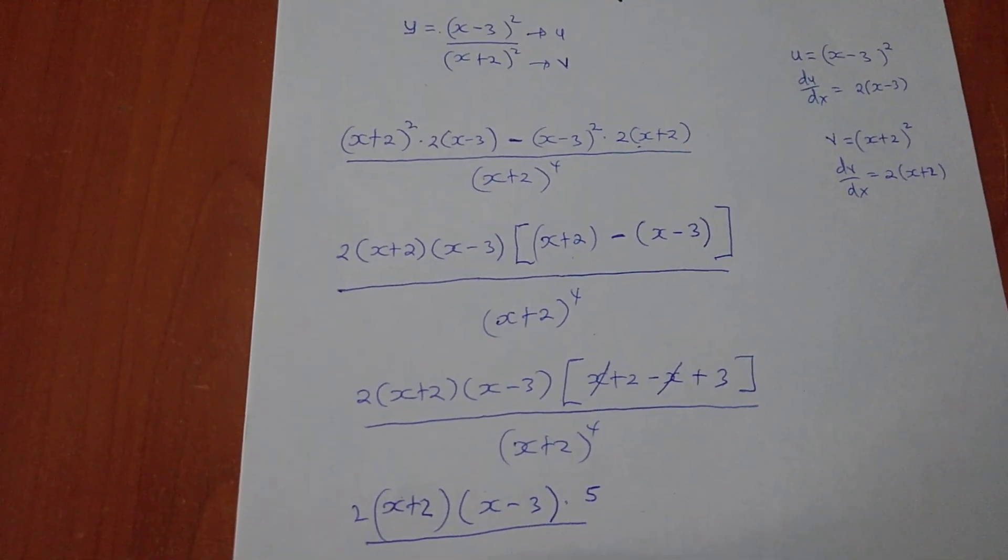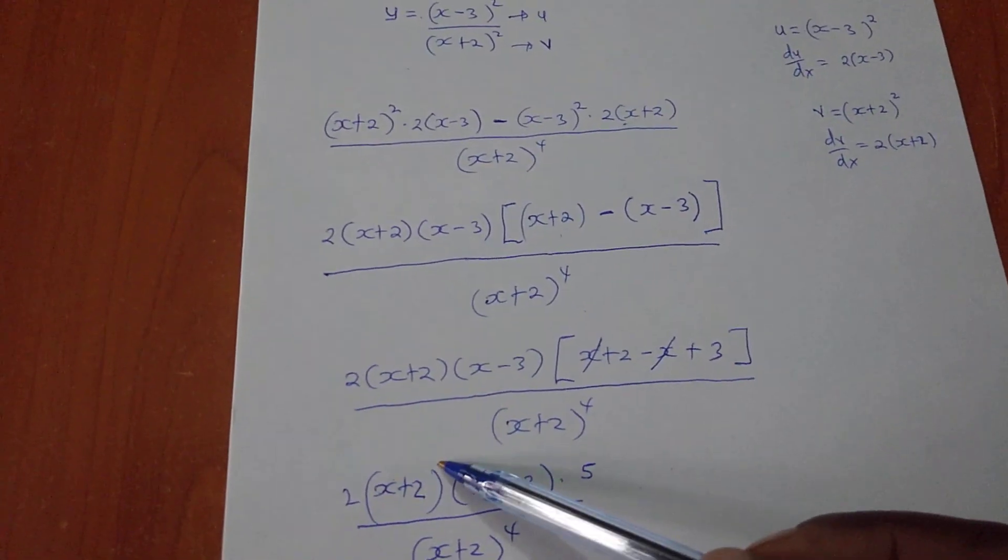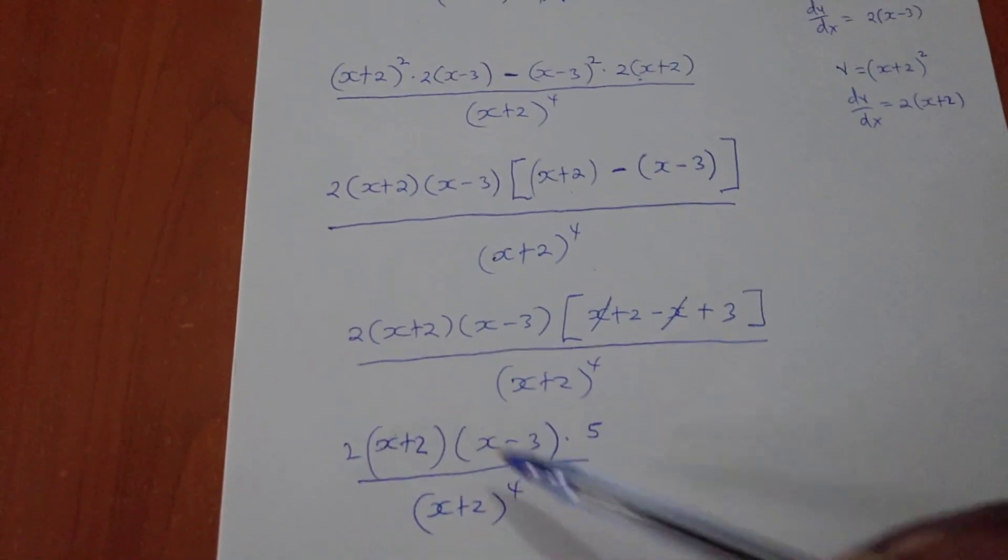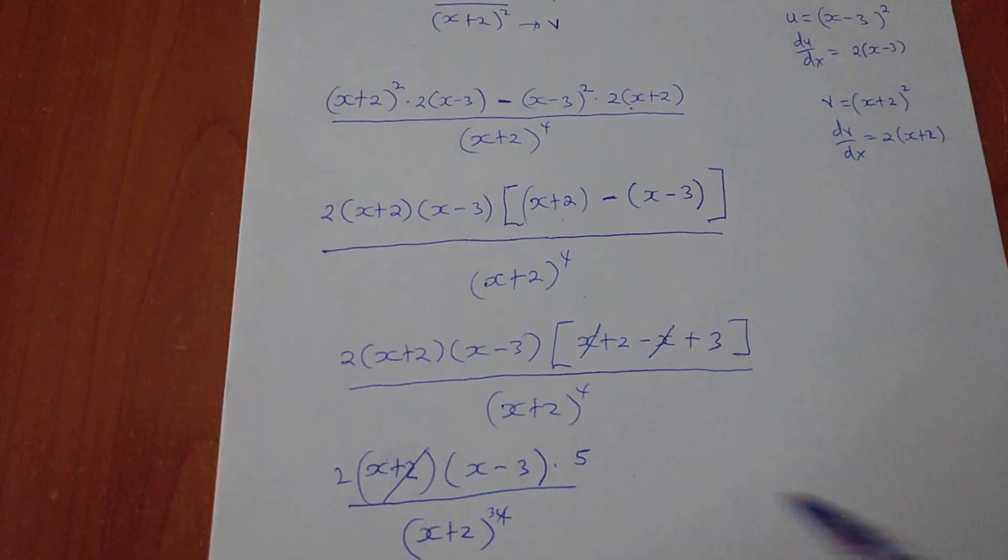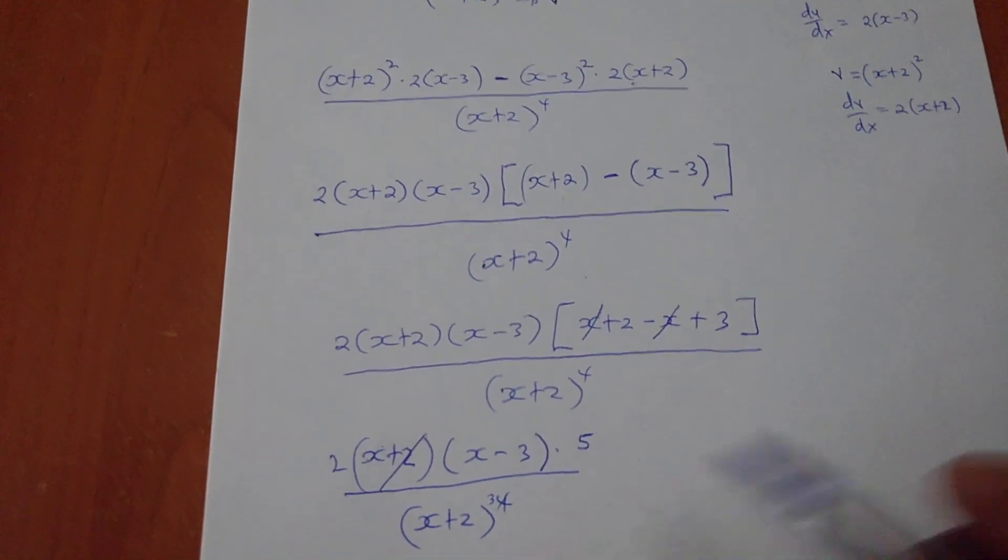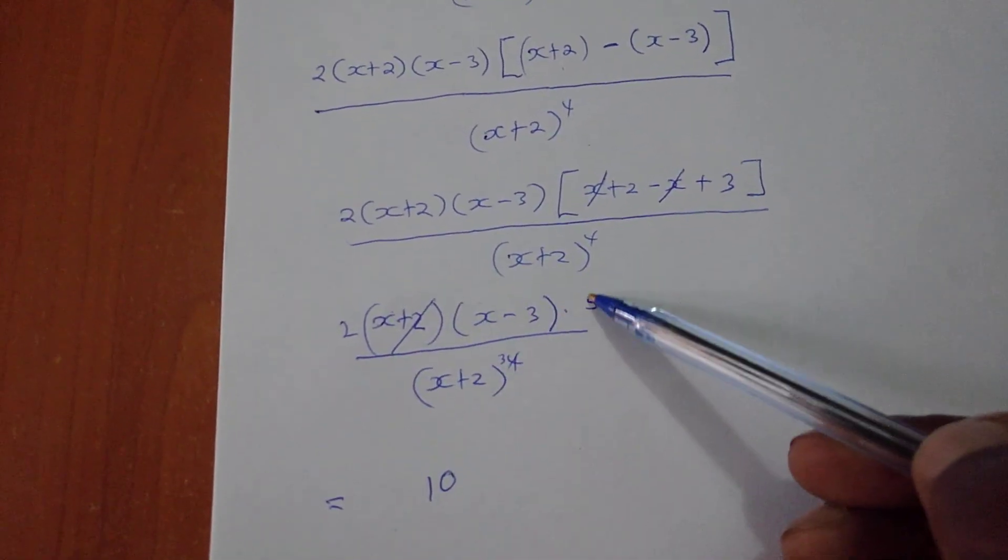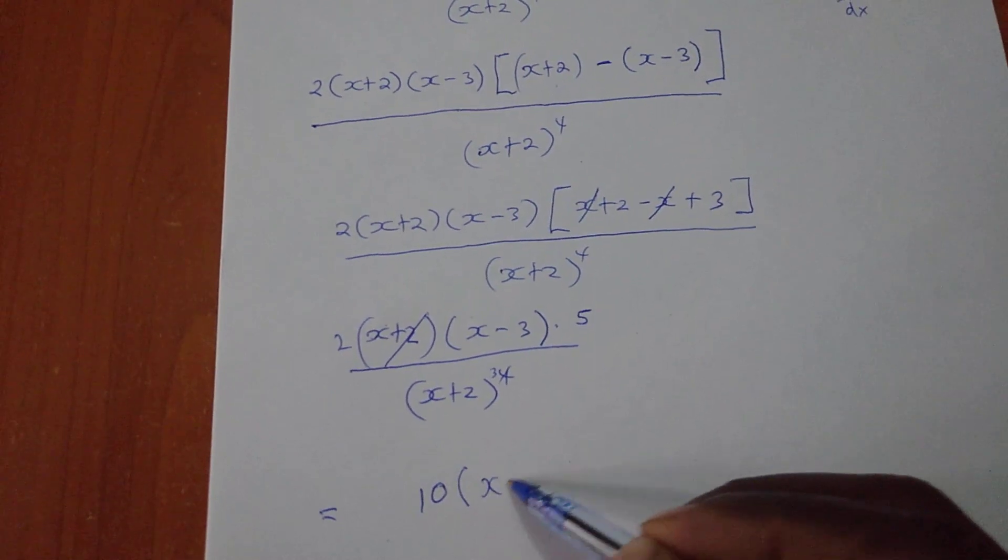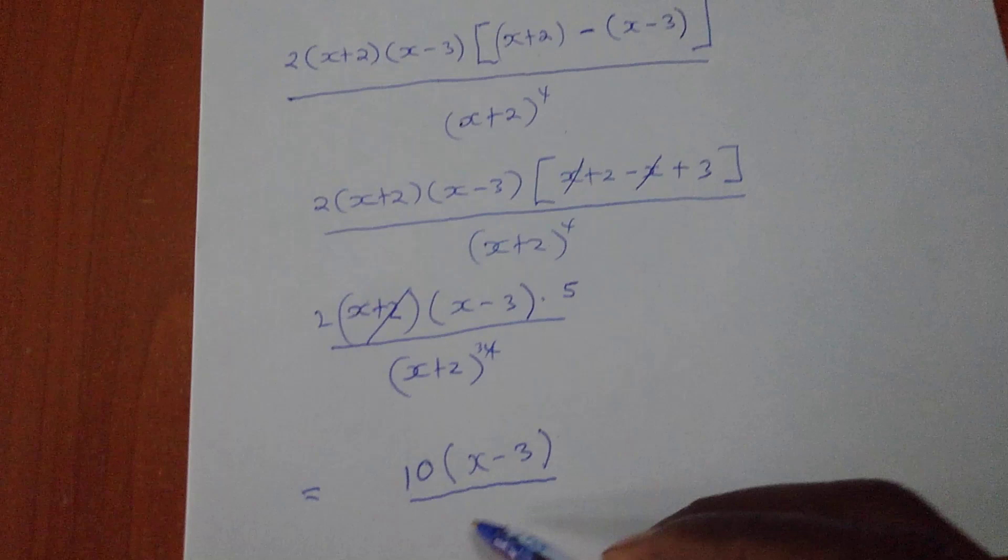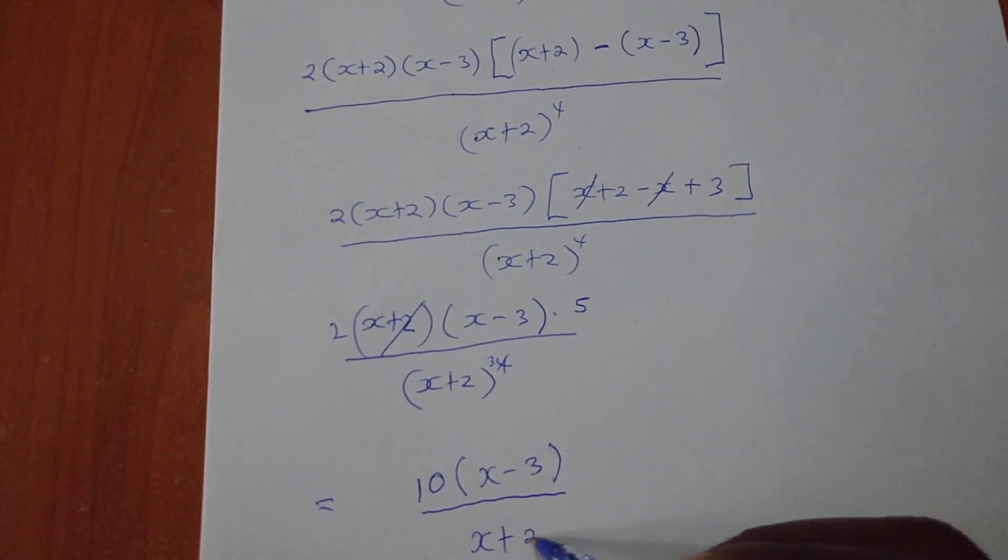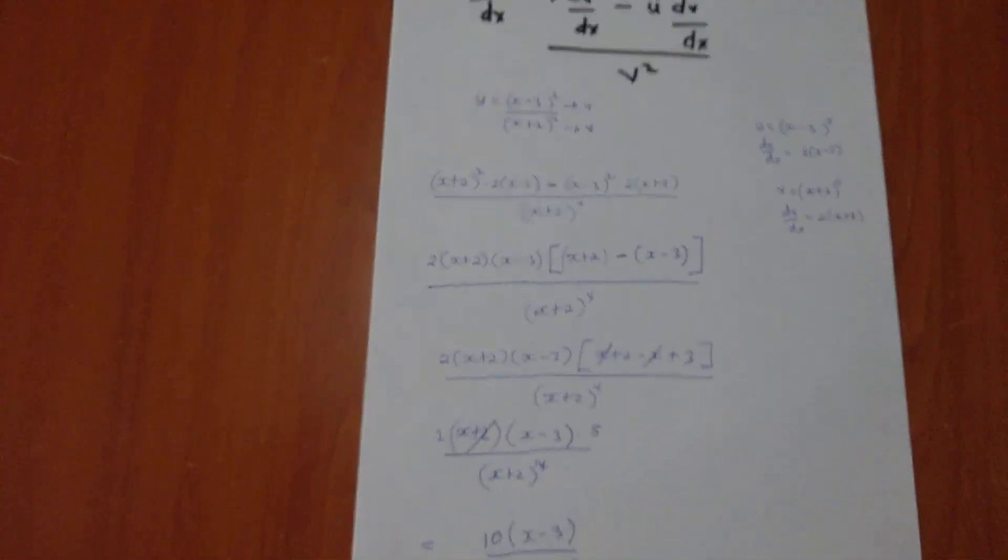Now this (x plus 2) in the numerator and this (x plus 2) to power 4 - this one will cancel and you remain with 3 down here. So my final answer after differentiation will be 10, which is 2 times 5, into (x minus 3), all over (x plus 2) to power 3. So this the whole of this is called quotient rule.